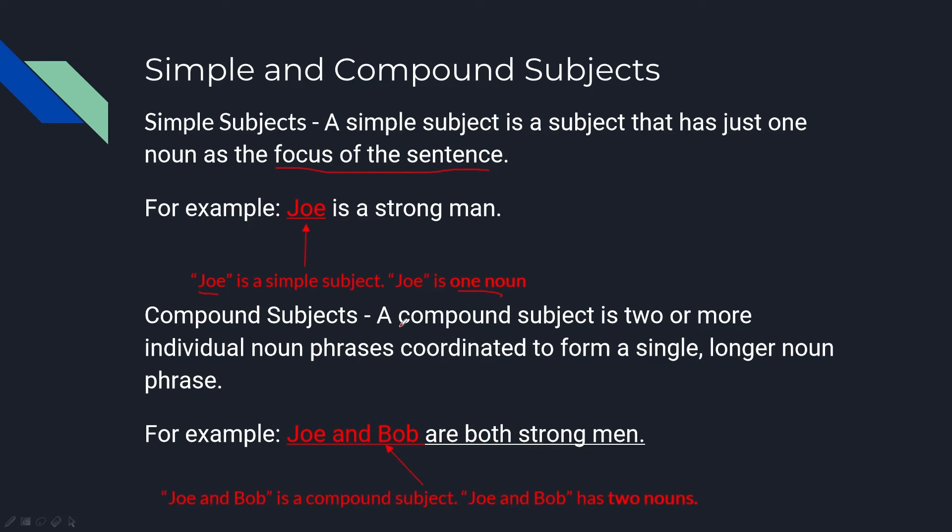Compound subjects: A compound subject is two or more individual noun phrases coordinated to form a single longer noun phrase. For example, 'Joe and Bob are both strong men.' 'Joe and Bob' is a compound subject - 'Joe and Bob' are two nouns.